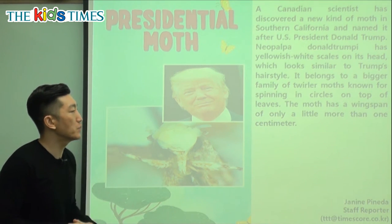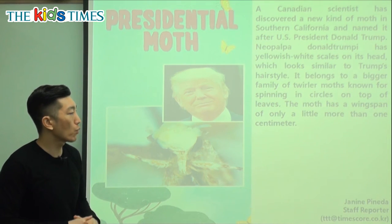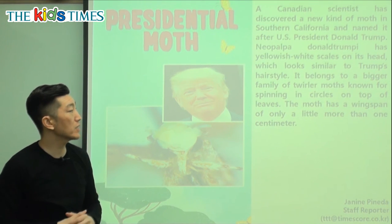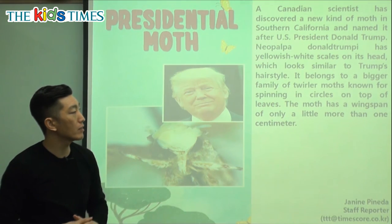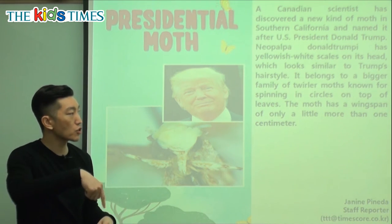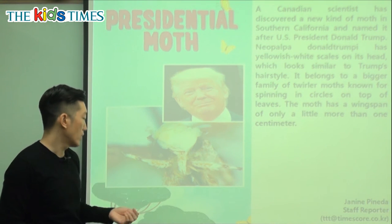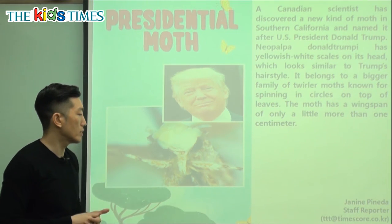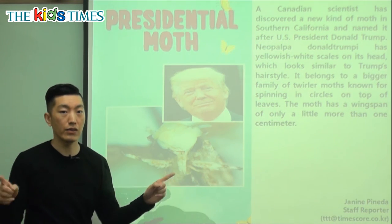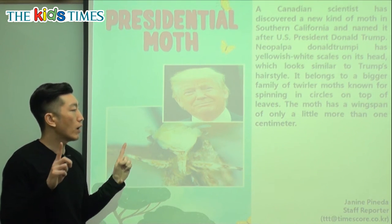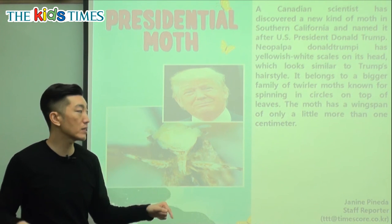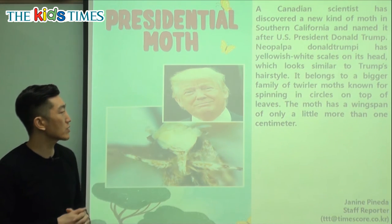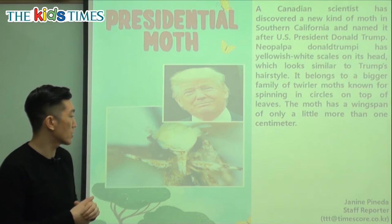It belongs to a bigger family of twirler moths known for spinning in circles on top of leaves. Twirling is when you spin — like when you dance and twirl somebody. This moth is a type of twirler moth, and what they do is spin in circles on top of leaves. The moth has a wingspan of only a little more than one centimeter. Wingspan is how wide the wings spread, and at just one centimeter, it's very, very small.